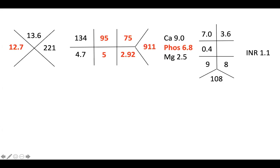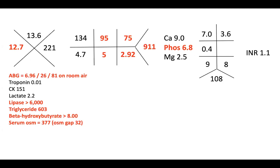The next set of labs, I have made it red to make sure it's obvious. Her ABG, she's got an acidosis of 6.96 with a PCO2 of 26 and a PO2 of 81 on room air. Troponin is negative. CK is normal. Lactate is 2.2, which is basically normal. Her lipase is greater than 6,000. Her triglycerides are 600. Beta hydroxybutyrate is off the chart, greater than 8. And her serum osmolality is 377 with a gap of 32.